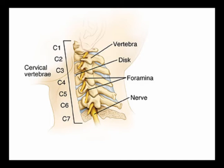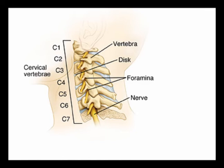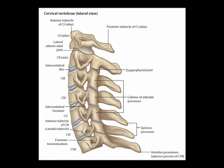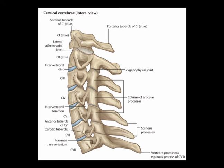C3 through C7 are known as typical cervical vertebrae. The primary motion of the upper portion of the lower cervical spine is rotation, C2 through C4. The primary motion of the lower cervical spine is lateral flexion, otherwise known as lateral bending.